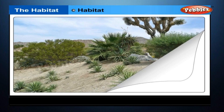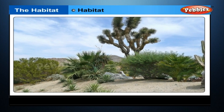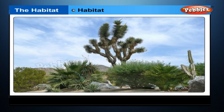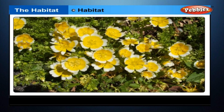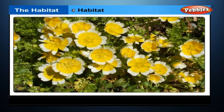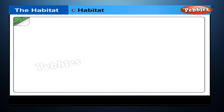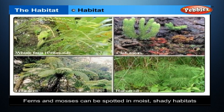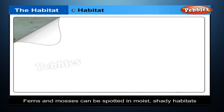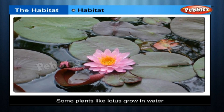Cacti live in the hot, dry desert because these plants have fleshy stems for storing any rainwater that falls. Buttercups like to grow in damp, grassy fields where they can get plenty of sun. Ferns and mosses can be spotted in moist, shady habitats. Some plants like lotus grow in water.